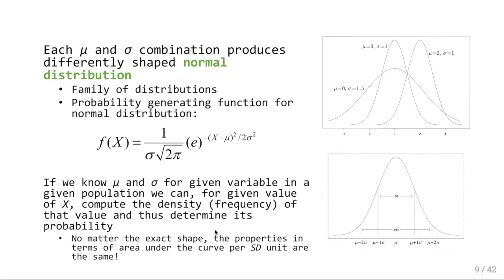Each mean and standard deviation combination produces differently shaped normal distributions. They're all normal distributions, but they'll look slightly different based on how big your standard deviation is and where your mean is. For example, a mean of two with a standard deviation of one, a mean of zero with SD of one, and a mean of zero with SD of one and a half are all normal but different. It's a whole family of distributions, and the probability generating function for the normal distribution allows you to plug values in and understand the probability of an observation.